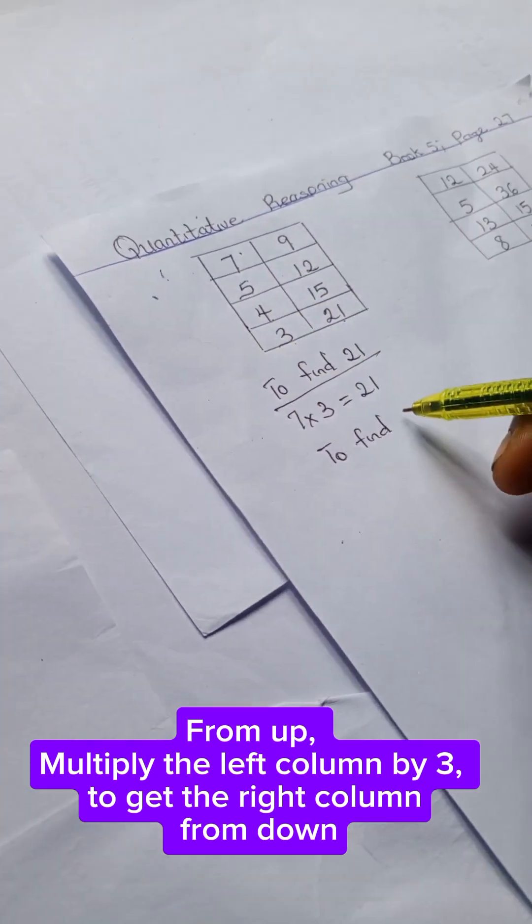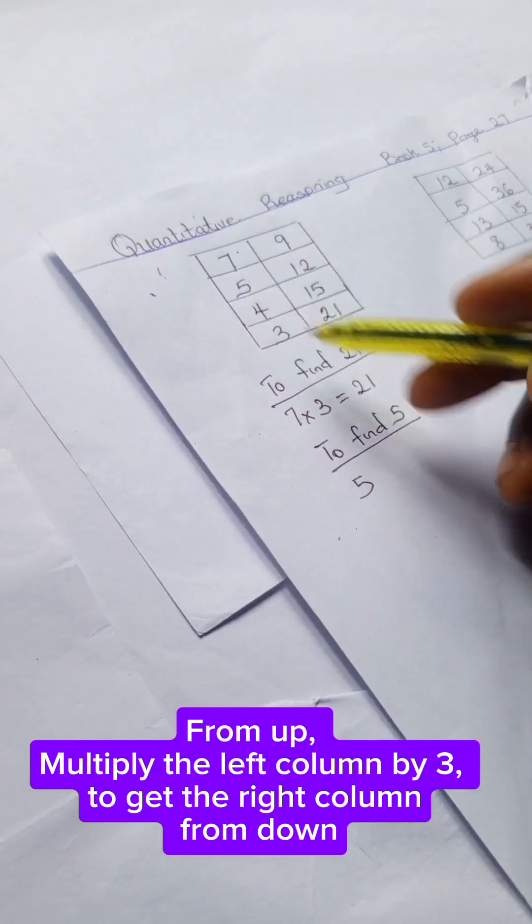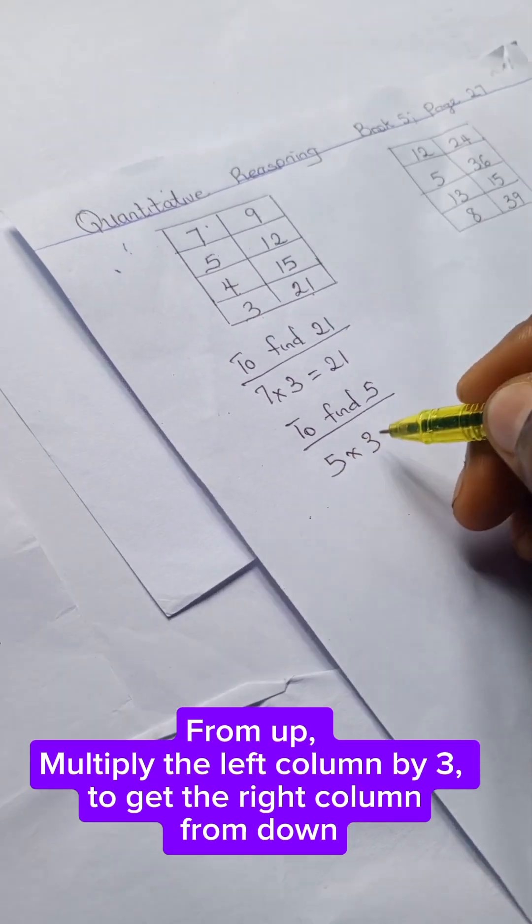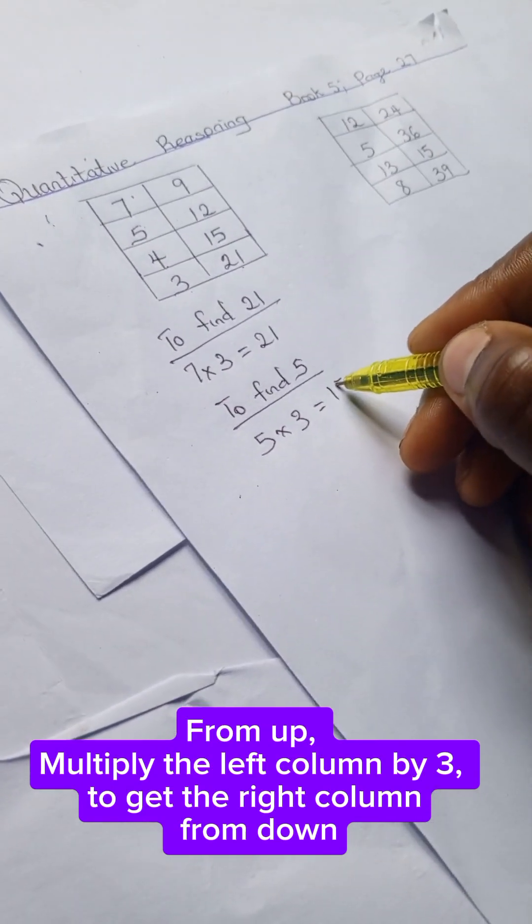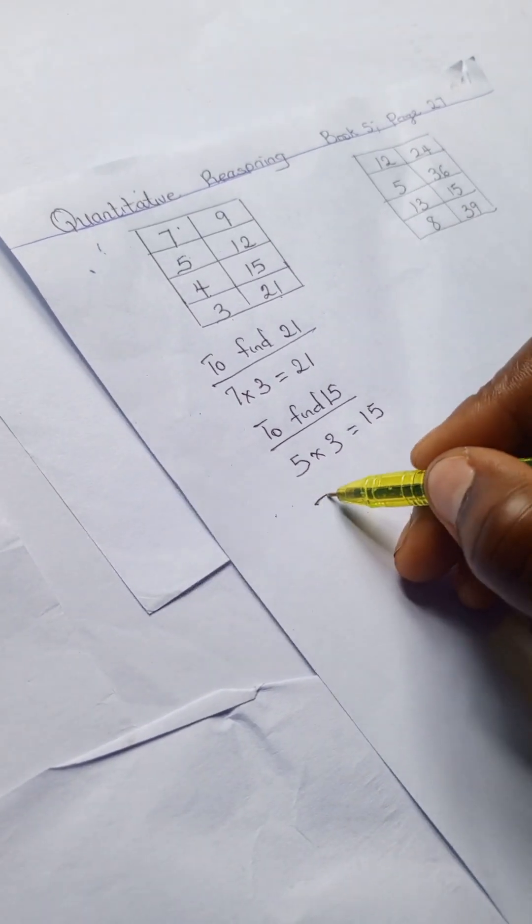5 times 3 gives us 15, to find 15 here. And to find 12, we have 4 times our imaginary 3, which gives us 12.